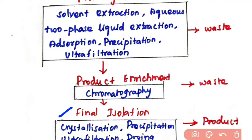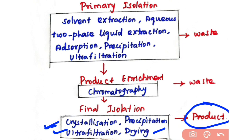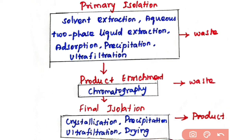The final step is final isolation. Here you use crystallization, precipitation, ultrafiltration, and drying methods. Ultrafiltration is used for liquid products and drying for solid products. After drying or ultrafiltration you obtain your product in the required form — it may be in crystal form or powder form. After this process you proceed to product packaging.